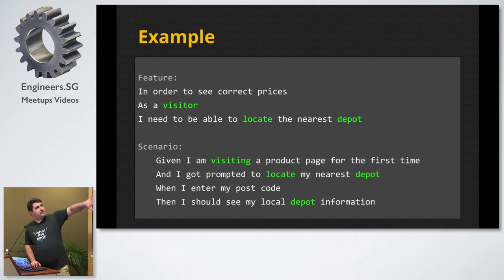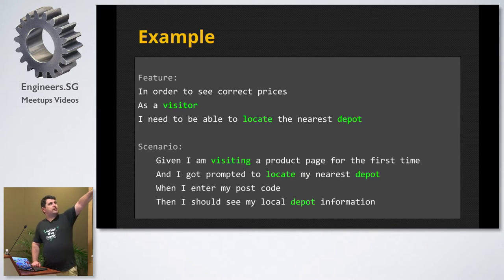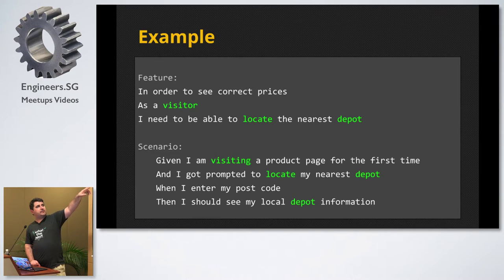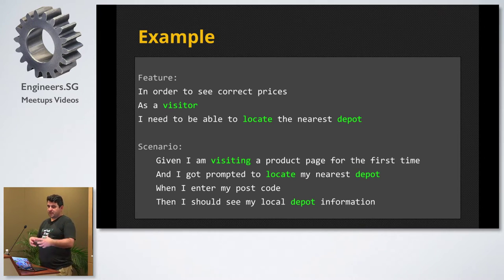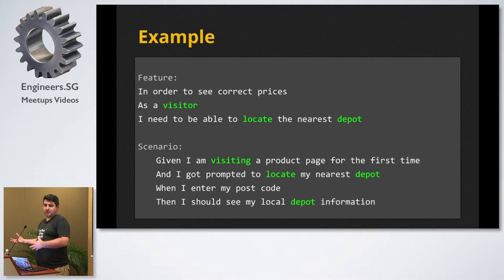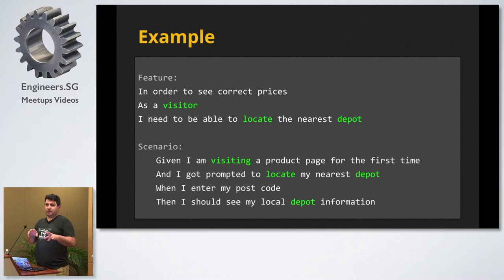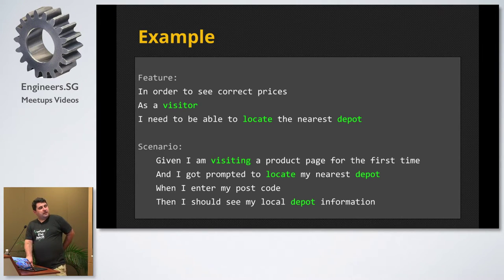When you have this little example, you can extract keywords. You have an actor of your story. 'In order to see correct prices, as a visitor I need to be able to locate the nearest depot.' Visitor is your actor. Then you have actions you can translate directly to your code. In our example, customers were B2B customers based all around the UK. Whenever they came to the website, they wanted to see their local warehouse prices. Prices weren't the same across the UK, so they had to enter their location and could only use one warehouse they belonged to.